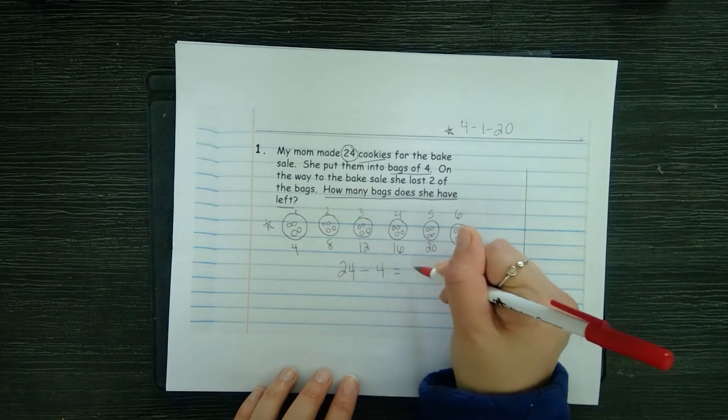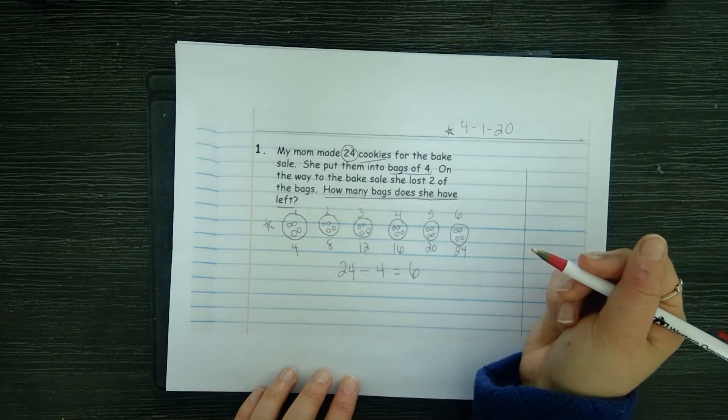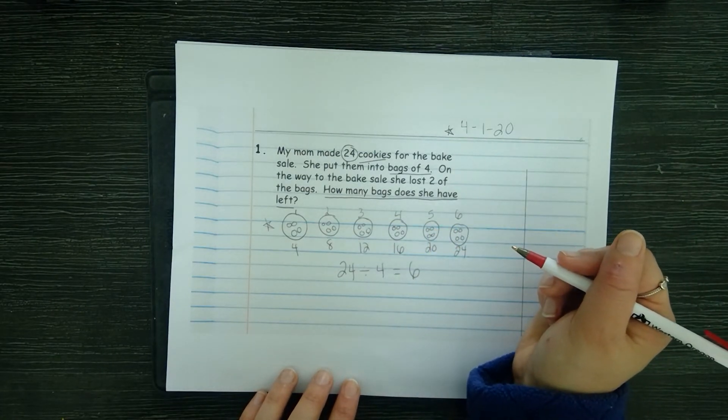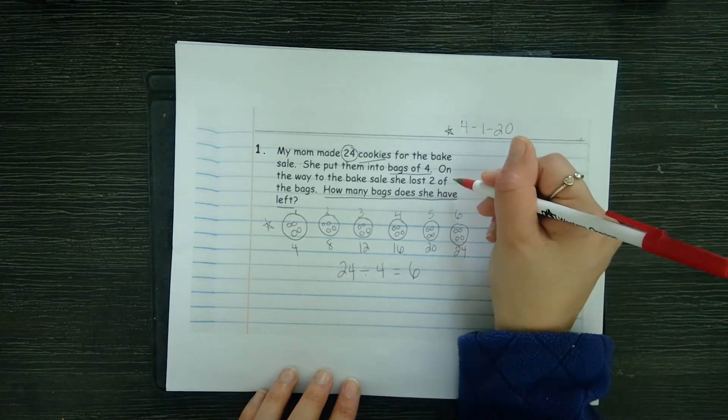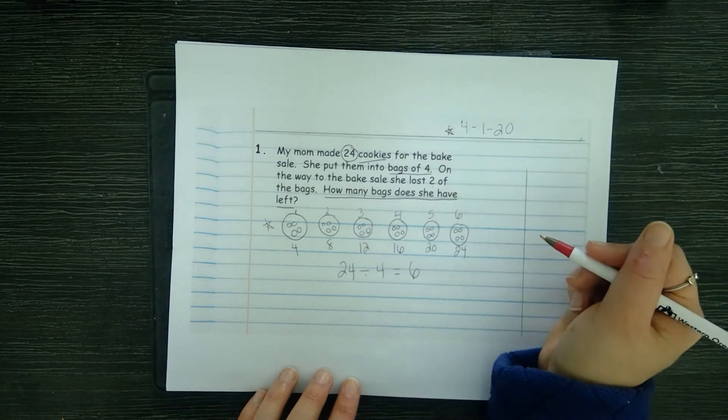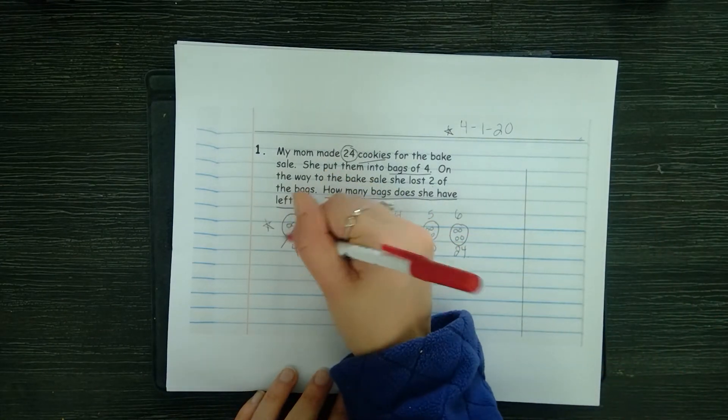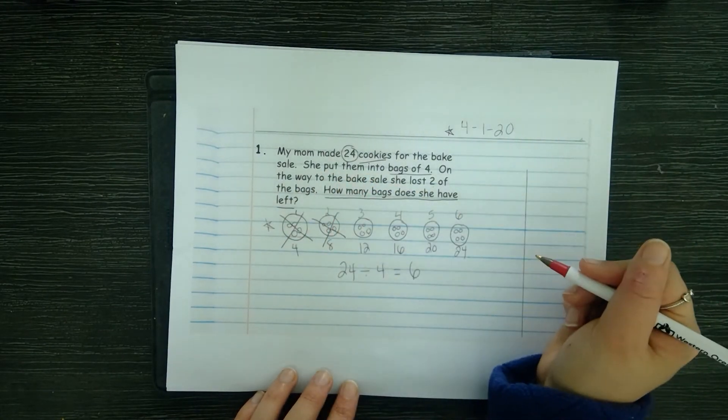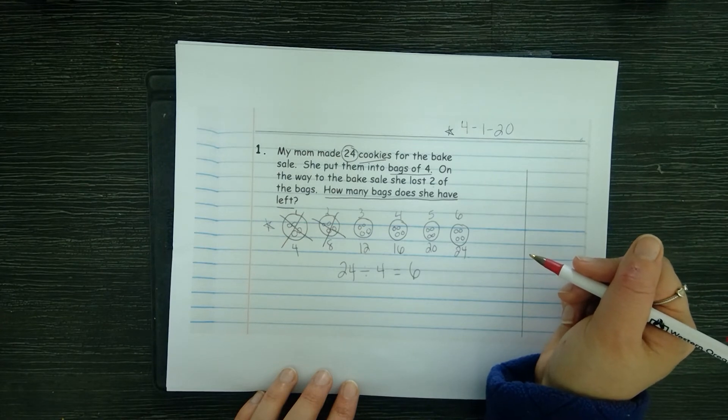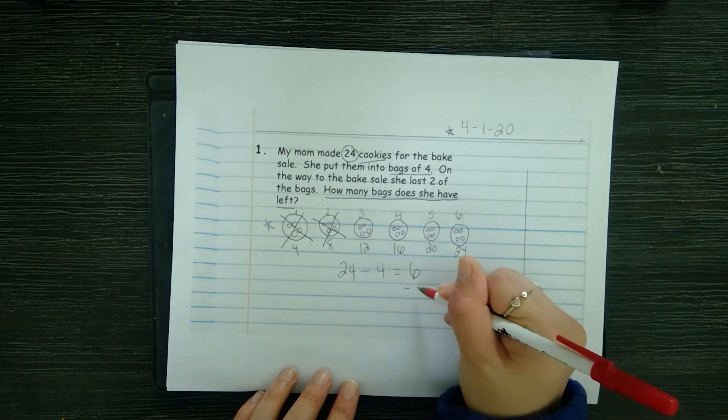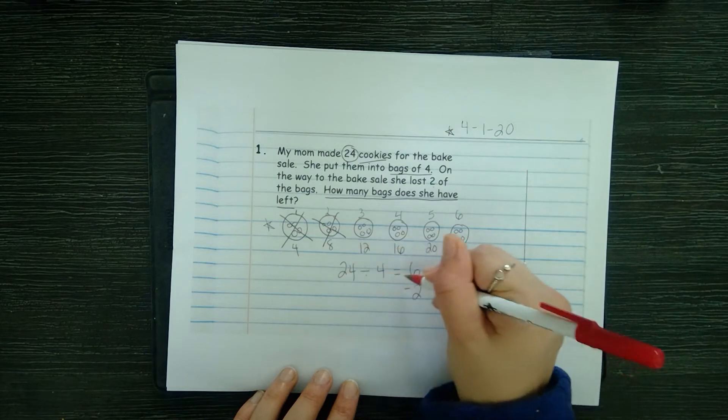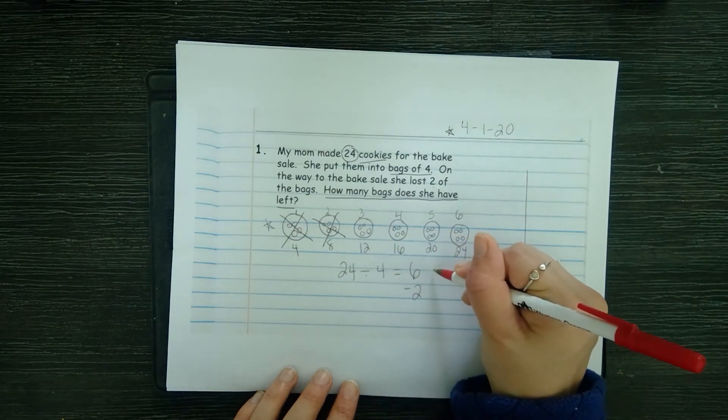But did I answer the question yet? No, something happened. She lost two of the bags. There's a couple different ways you can do this. You can cross out two of the bags and then count again, or you can subtract two. She has six bags total at the very beginning.